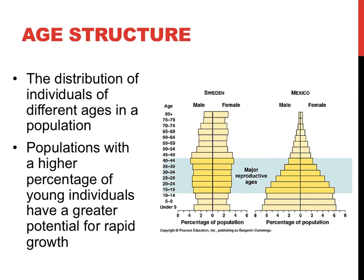The graphics shown to the right are referred to as age structures. They show the gender and age makeup of a population. The x-axis shows the percentage of the population of each gender, while the y-axis breaks down that population into different age groups. Highlighted in blue on the graphic are the primary reproductive ages — individuals most likely to produce offspring. These graphics are most useful for predicting future population growth. The more pyramid-like the graphic is, the more individuals there are, or will be, in the primary reproductive ages. The pyramid-like age structure of Mexico could be expected to rapidly increase in size, while the uniform structure of Sweden would forecast a stable or shrinking population.